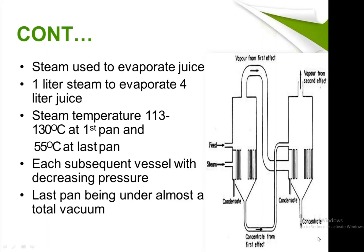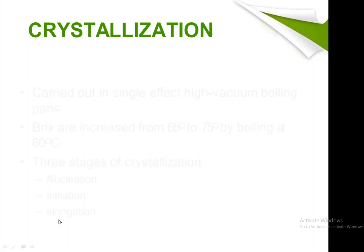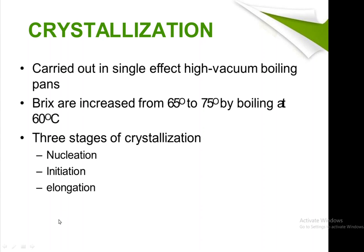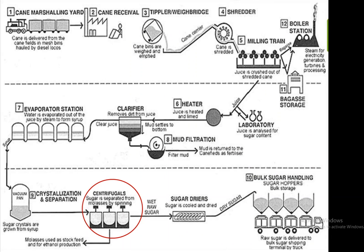After evaporation, the next step is crystallization and separation, carried out in single-effect high-vacuum boiling pans. Brix is increased from 65 to 75 degrees by boiling at 60 degrees Celsius. There are three stages of crystallization: nucleation, integration, and elongation. As a result, massecuite is obtained — a mixture of crystals and mother liquid called molasses — which can be further transferred to crystallizers at low temperature.